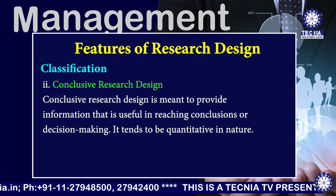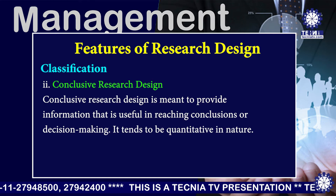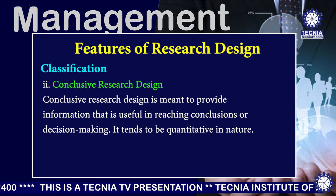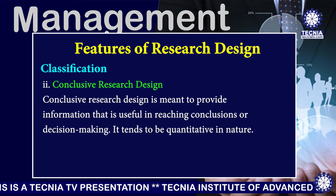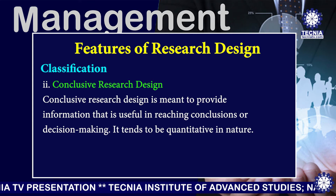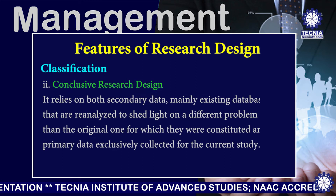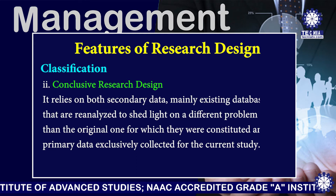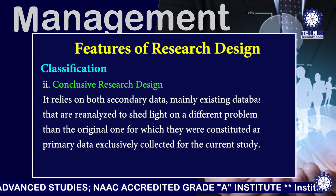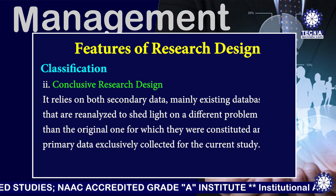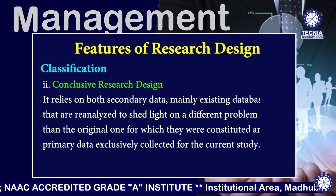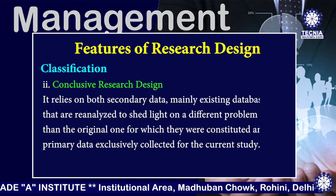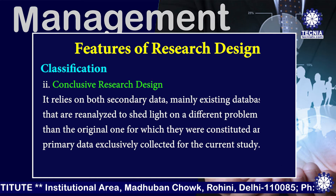The second type is conclusive research design. Conclusive research design is meant to provide information that is useful in reaching conclusions or decision making. It tends to be quantitative in nature. It relies on both secondary data, mainly existing databases, data re-analyzed to shed light on a different problem than the original one for which they were constituted, and the primary data exclusively collected for the current study.